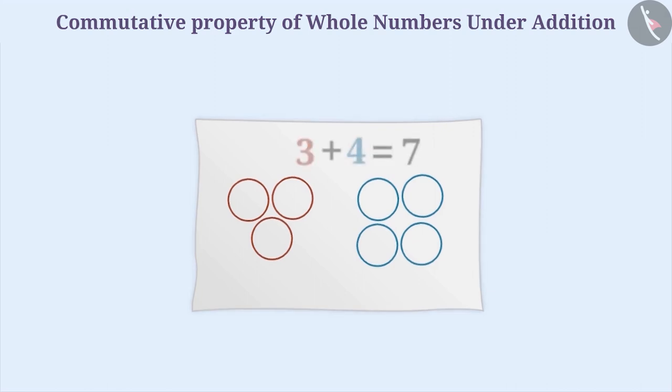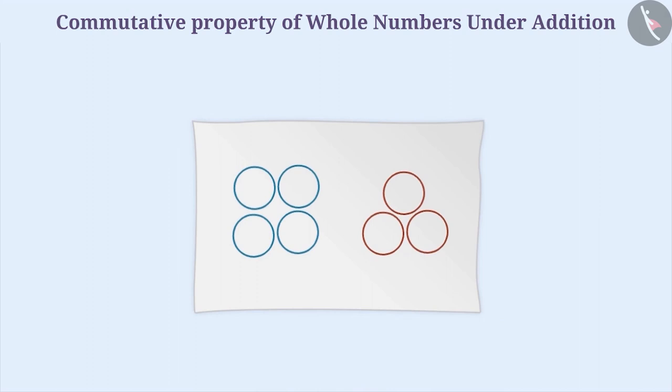If we rotate the paper this way, then the order of the circles will change. There will be four circles on the left side and three circles on the right. Is there any change in the total number of circles? No. The number of circles is the same as before, that is 7.